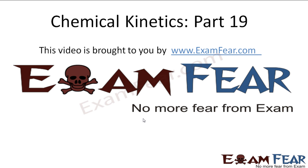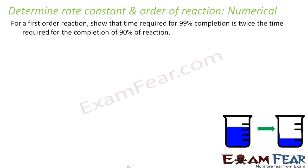Hello friends, this video on chemical kinetics part 19 is brought to you by examfa.com — no more fear from exam. For the first-order reaction, we have to show that the time it takes to complete 99% of the reaction is twice the time it takes to complete 90% of the reaction. It is a first-order reaction.